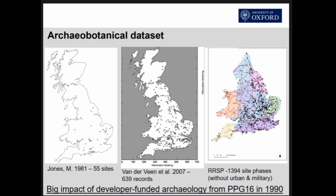In terms of what our dataset is like now: back in 1981 there were 55 sites from the Roman period, many of them hand-picked antiquarian studies. Marika van der Veen's study in 2007 had over 600 site phases, and a most recent study found nearly 1400 site phases without any urban and military sites. So there's a large corpus of data in this region.